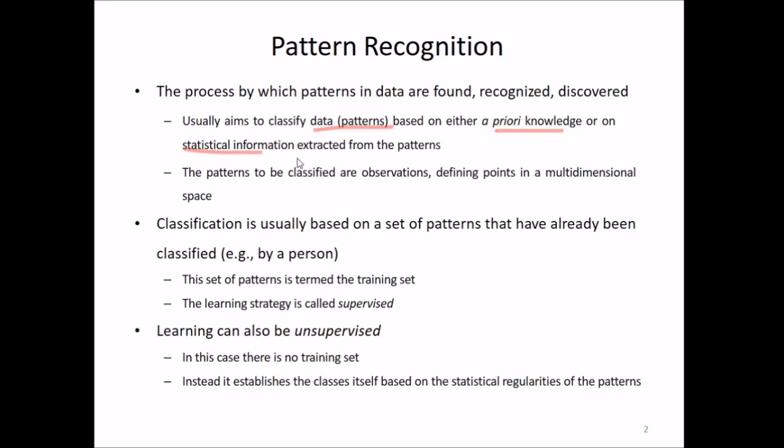Classification is usually based on a set of patterns that have already been classified, and this set of patterns is termed the training set. This learning strategy is known as supervised learning. The other aspect is unsupervised learning. In this case there is no training set. Instead, it establishes the classes itself based on the internal statistical regularities of the patterns in the data.